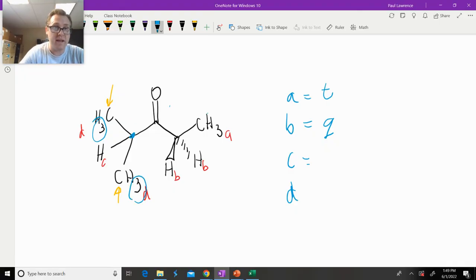Three and three. So that's a total of six. Six, so six plus one is seven, so that would be a septet, right?